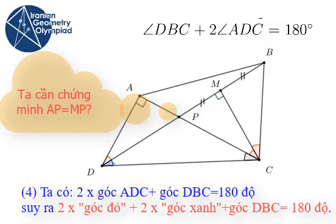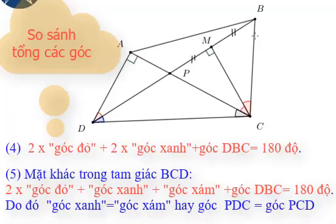On the other hand, this angle plus two times the red angle plus this angle and plus this angle is 180 degrees. This proves that this angle is equal to this angle, so PD is equal to PC.